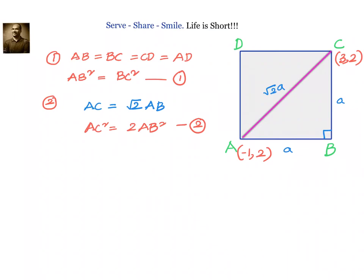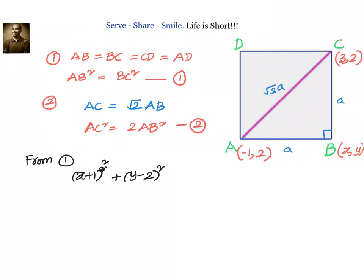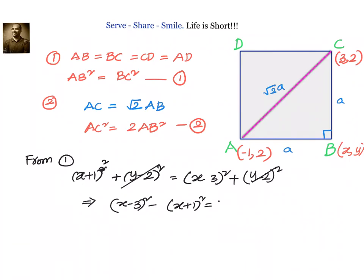Let B = (x, y). We need to find this (x, y). From Condition 1, AB² = BC². AB² is (x+1)² + (y−2)², using the distance formula (x₂−x₁)² + (y₂−y₁)². BC² is (x−3)² + (y−2)². Since (y−2)² appears on both sides, we can cancel it out. We then write (x−3)² − (x+1)² = 0.